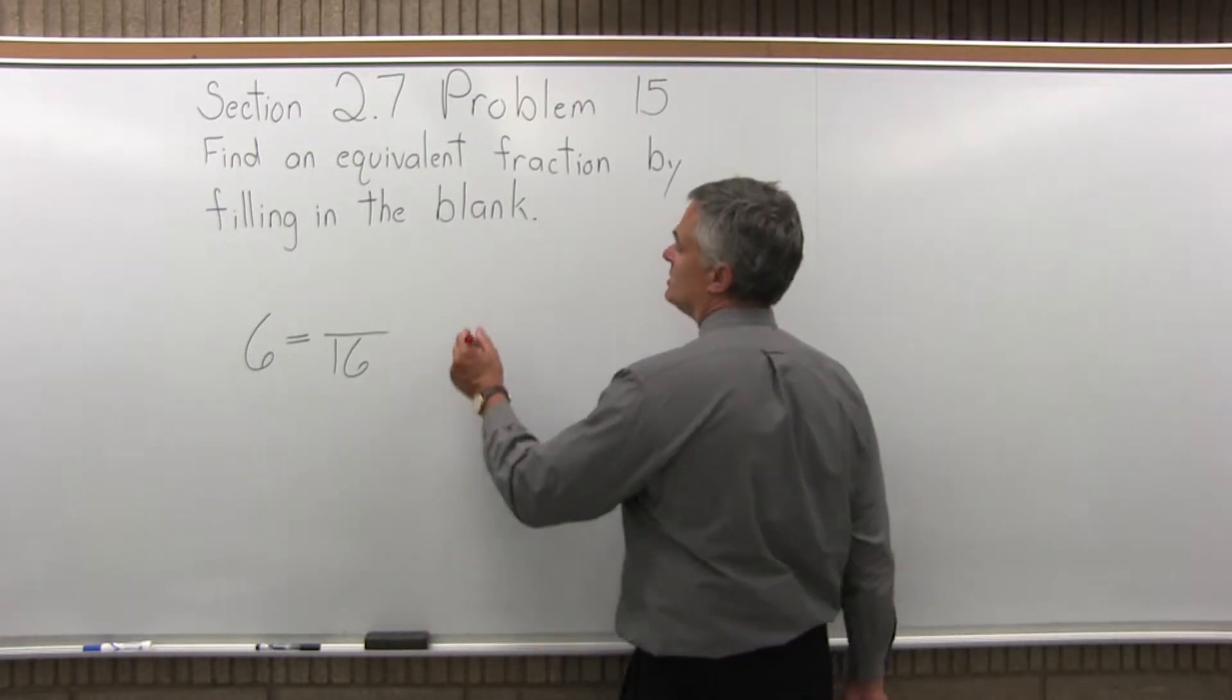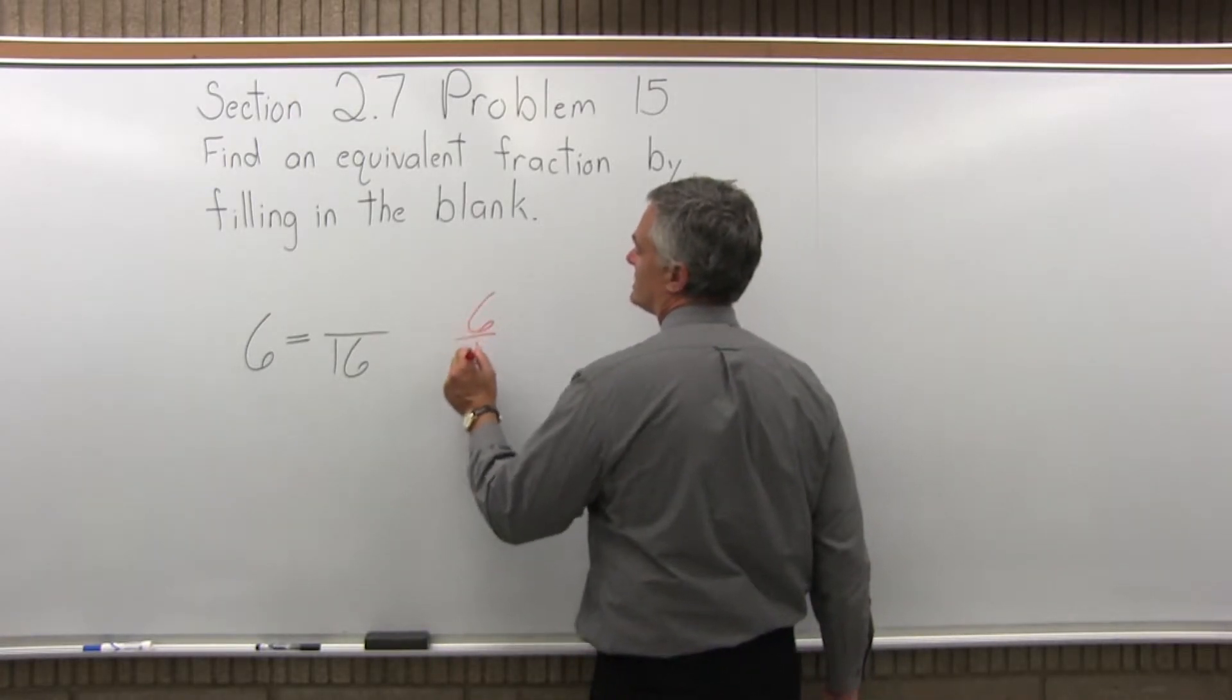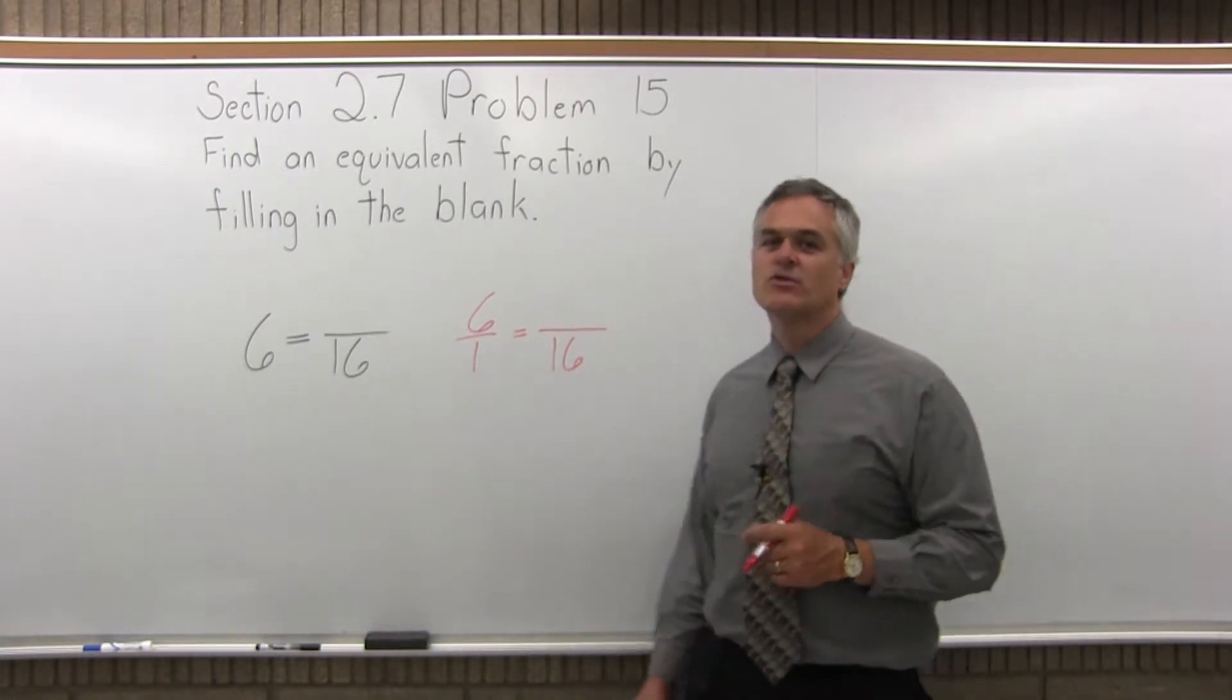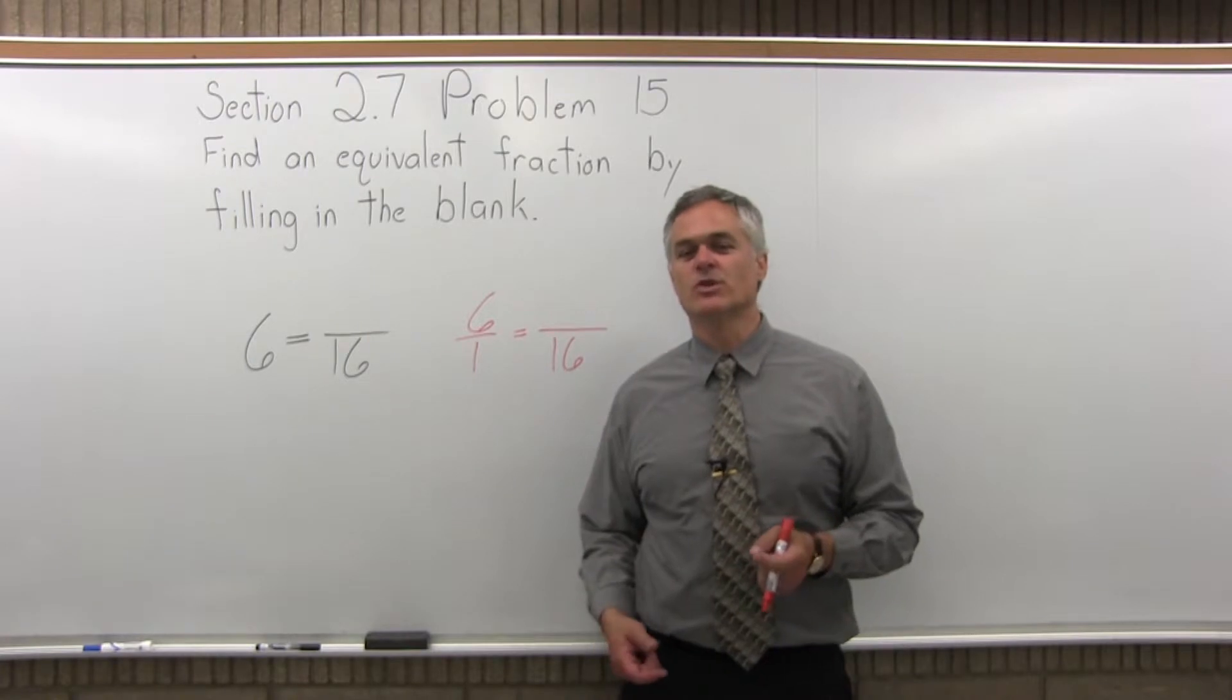Well, to get the problem started, let me just change that. Instead of just 6, let's write it as 6 over 1 equals blank over 16. So now I really have two fractions with a numerator and denominator.